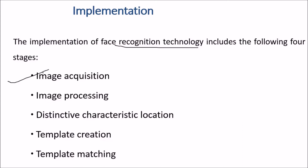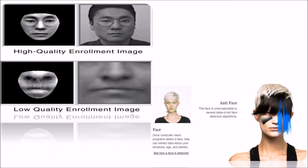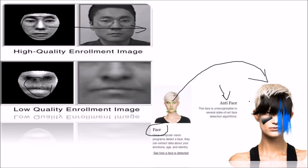Implementation of face recognition technology involves strategies including image acquisition, image processing, distinctive characteristic location, template creation, and template matching. A high quality enrollment image can be reliably matched, while a low quality enrollment image cannot. Once a face is detected, computer vision programs can extract data about emotions, age, and identity. An anti-face — where the face is made unrecognizable — can defeat even state-of-the-art detection algorithms.